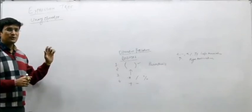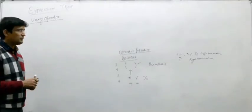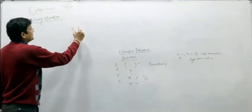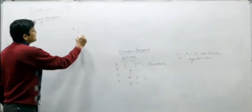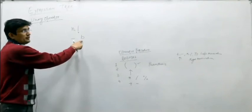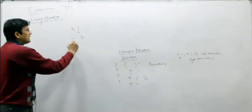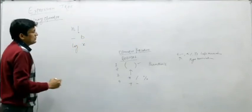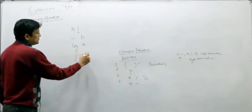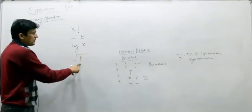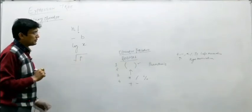Let us discuss unary operators and how to build the expression tree for them. For example, factorial n — here factorial is an operator. Similarly, minus B, where B is the operand and minus is the negation operator. Also, log x, where log is the operation applied on x, and under root p, where p is the operand and under root is treated as the operator.